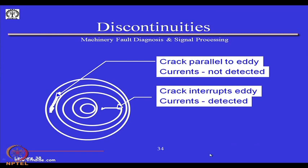Certain things to note: from the top view, if cracks are parallel to the eddy currents, no eddy current disturbance will be detected because they are not interrupting the eddy currents. If the cracks are in the cross dimension, the eddy currents are disturbed and you will get a signal.